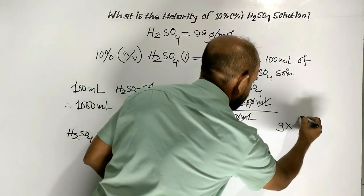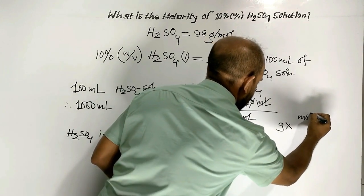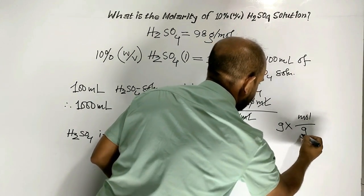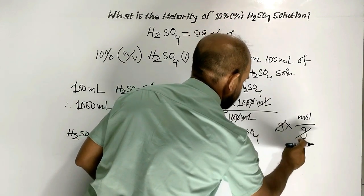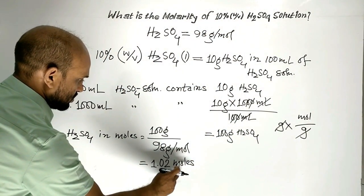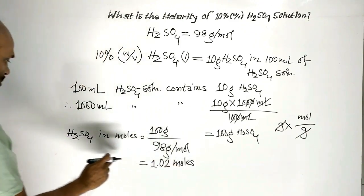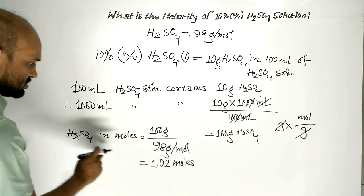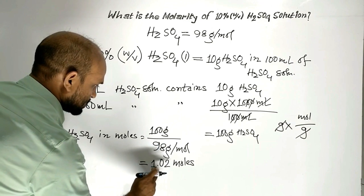Here we multiply by mole per gram, so the grams cancel out. Ultimately, we get moles. That is to say, sulfuric acid is 1.02 moles.